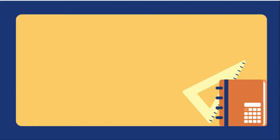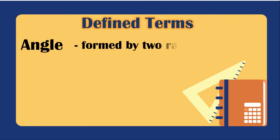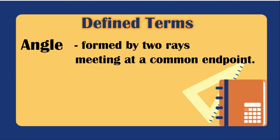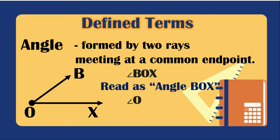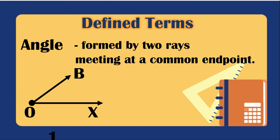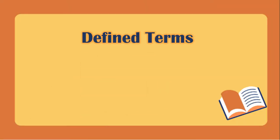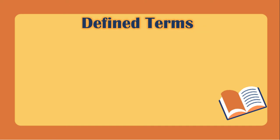The third defined term is the angle. An angle is formed by two rays meeting at a common endpoint called the vertex. We can name this angle as angle BOX, or simply angle O using the vertex, or by a number if one is available inside the angle.